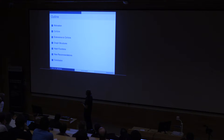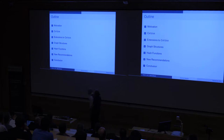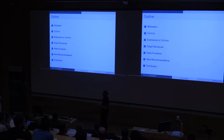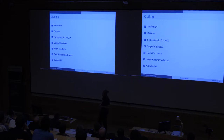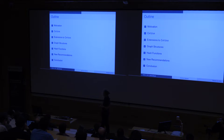I want to do some motivation at the beginning, then introduce the Catena framework itself again for those who may not know it. Then I want to present some extensions, some basic graph structures used to instantiate the core of Catena, and briefly compare hash functions. At the end, most importantly, I want to present four new recommendations which we constructed based on our requirements.